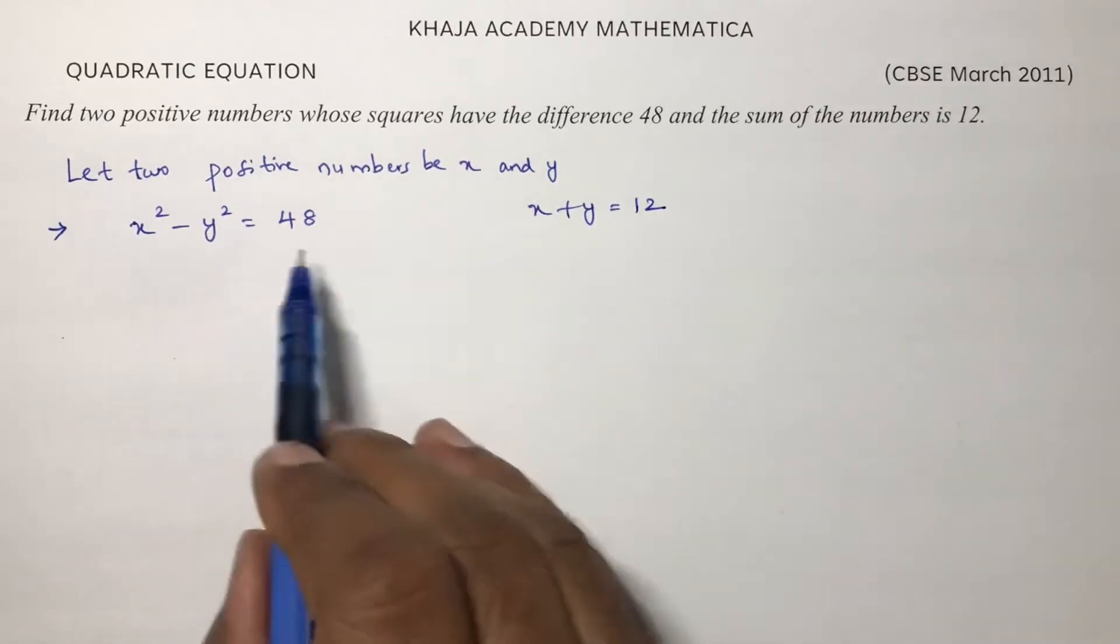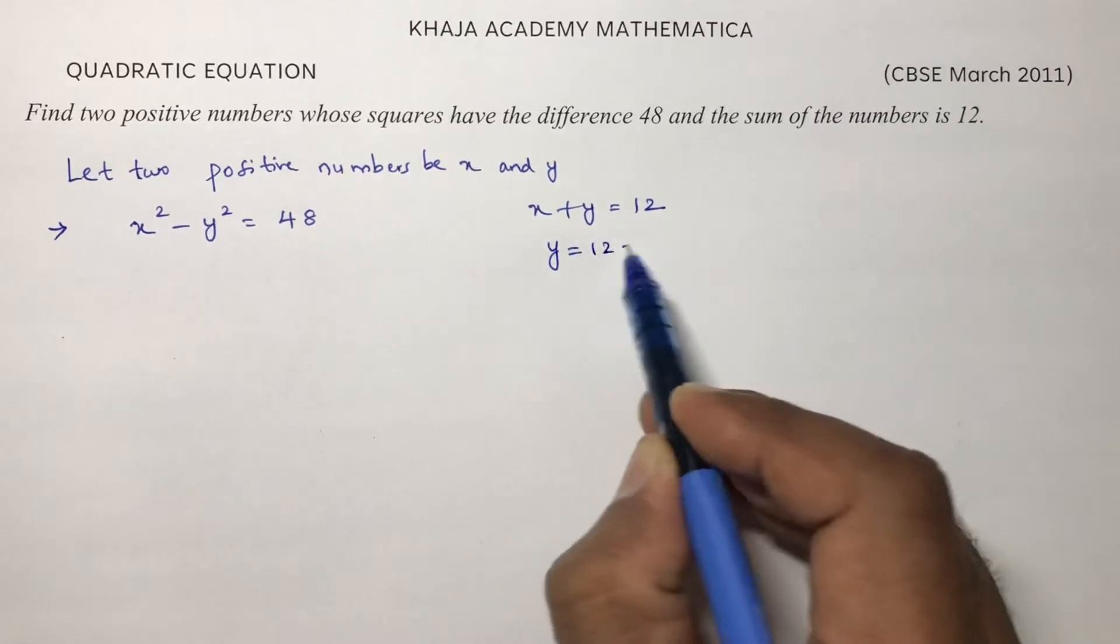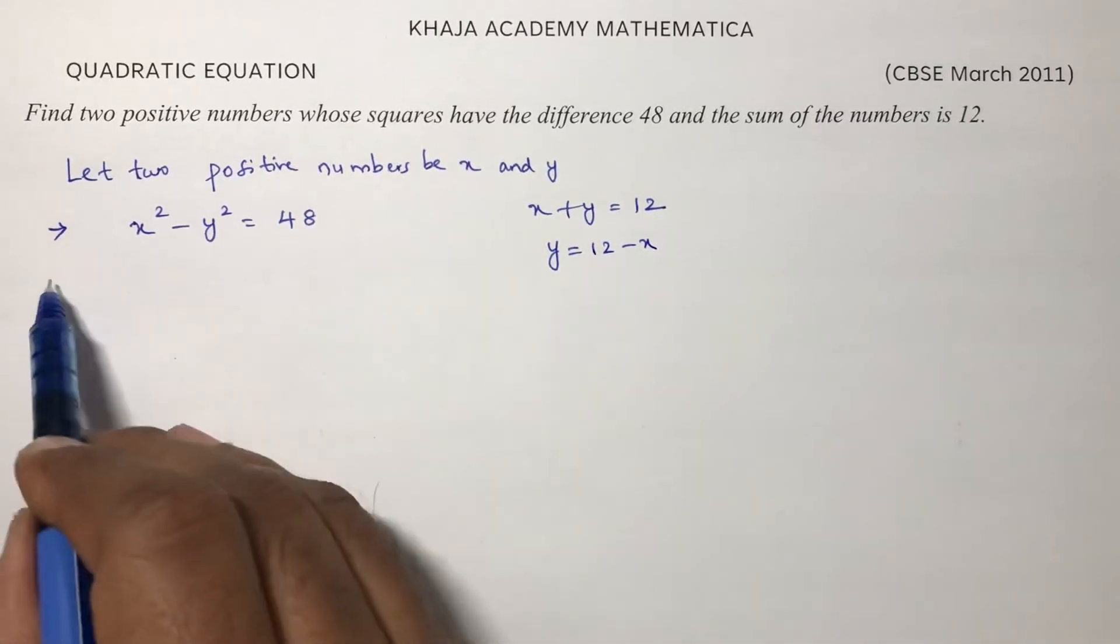From these two equations we have to simplify. I will take the value of y, y = 12 - x, and substitute in this equation.